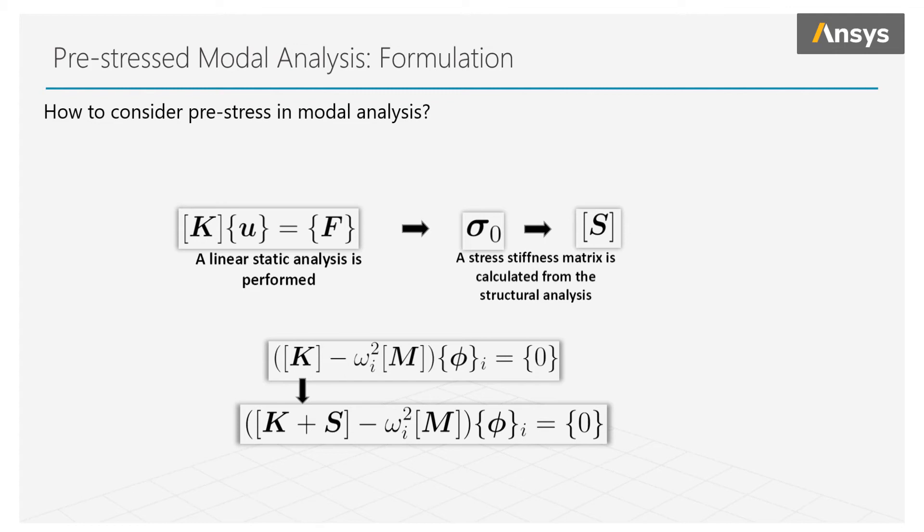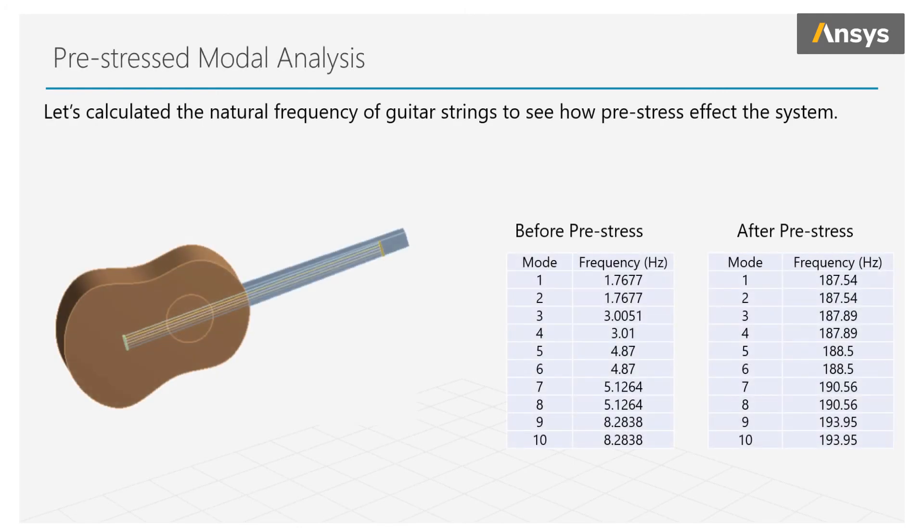Let's calculate the natural frequencies of a guitar string to see how pre-stress affects the system. A displacement is applied on the ends of the strings to put the strings in tension. The natural frequencies of the strings are drastically increased because of this pre-stress effect. Usually, pre-stressing in tension causes natural frequencies to increase. A compressive state causes the natural frequencies to decrease.